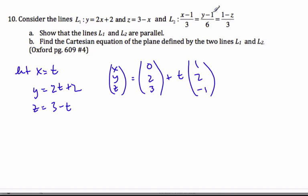If I look at line 2, my direction vector has to be a scalar multiple. So in line 2, my direction vector is 3, 6, and careful the signs here, negative 3, which is equal to 3 times 1, 2, minus 1. Therefore, they are parallel.